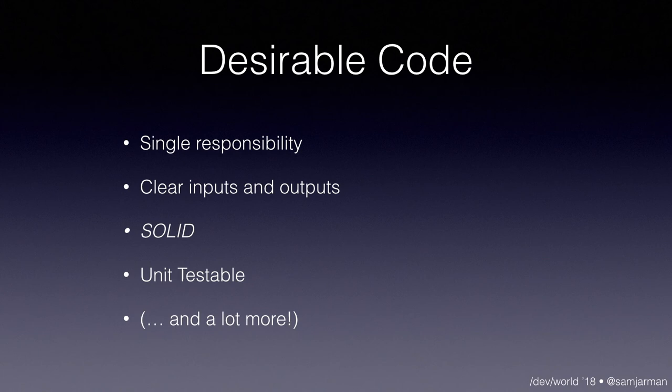So it was time to advance to the next age: the Tool Age. In the Tool Age, we start worrying about tooling, processes, practices and architecture. And we start worrying about desirable code — what does good code look like? For the scope of this talk, it's single responsibility, essentially. Code, modules, classes, structs — whatever — has a single well-defined responsibility. It has clear inputs and clear outputs. It follows reasonable SOLID patterns. The S is single responsibility. It should use protocols, subclassing, composition, inheritance. It should be unit testable. If it's a sensible small unit with clear inputs and outputs, it should be unit testable.